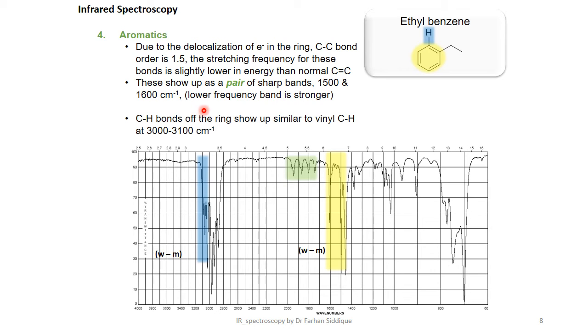In aromatics, due to the delocalization of the electron in the ring, carbon-carbon bond order is 1.5. The stretching frequency for these bonds is slightly lower in energy than normal carbon-carbon double bond. These show up as pair of sharp bands at 1500 and 1600 cm⁻¹, lower frequency band is much stronger, for the C-H bonds of the ring.